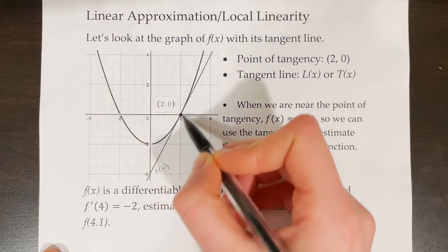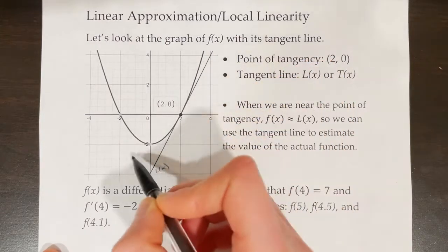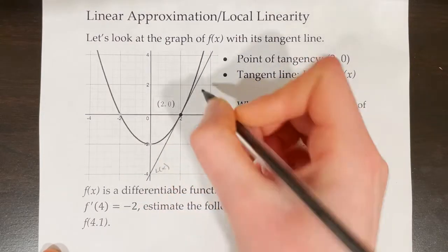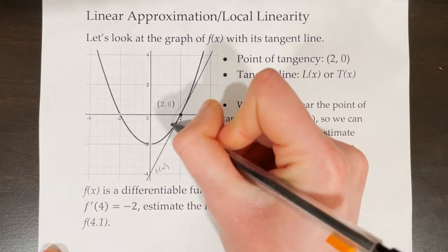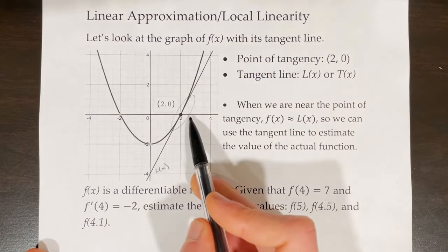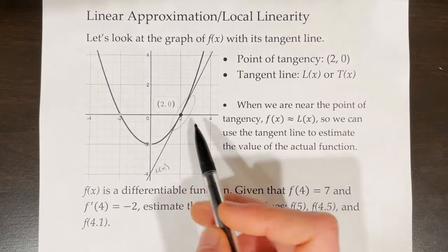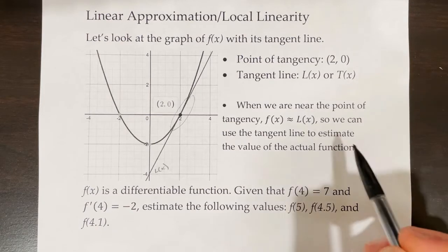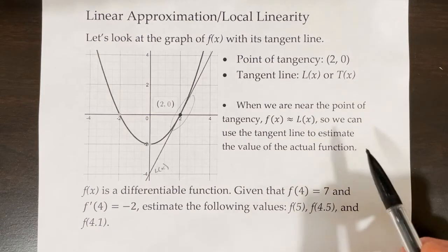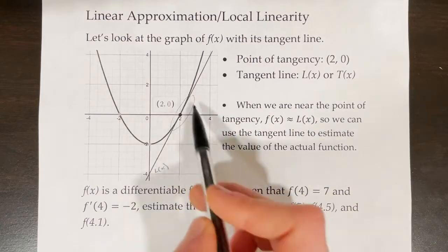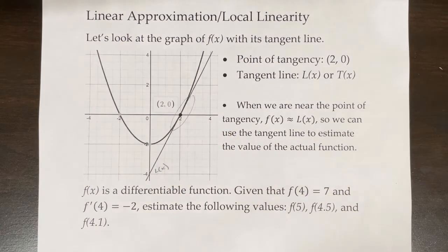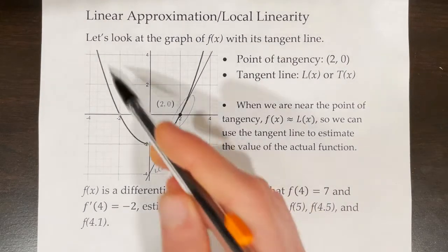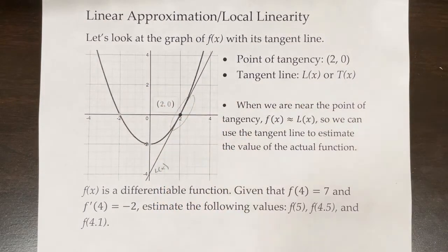The actual f of x value on the parabola is very close to the tangent line value within that range, where we are close to the point of tangency. So we can use the tangent line value to estimate the value of the actual function when we are near that value. This is useful in a situation when we don't have information about what the actual function is, but we do have information about the tangent line.